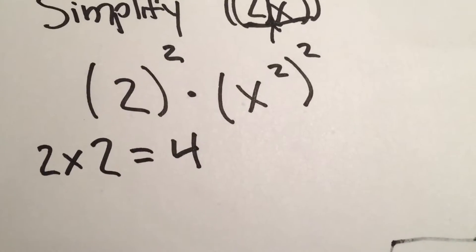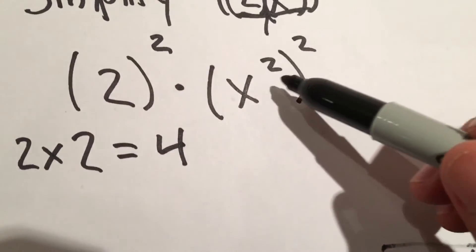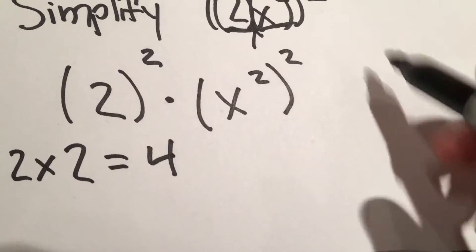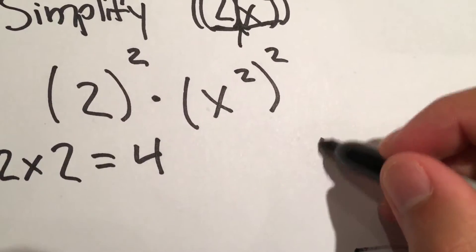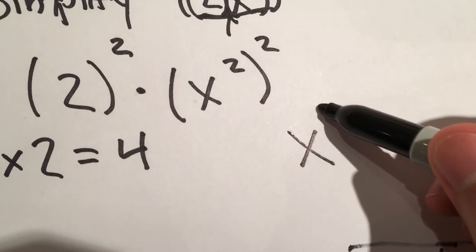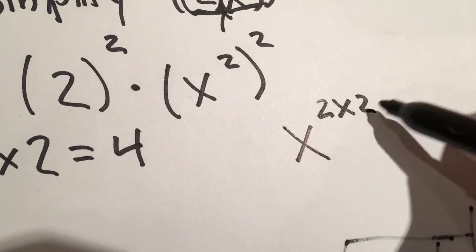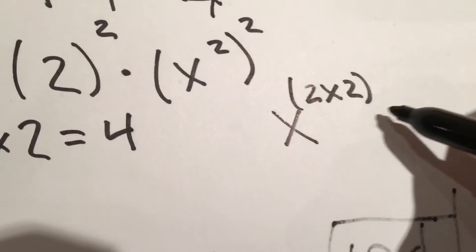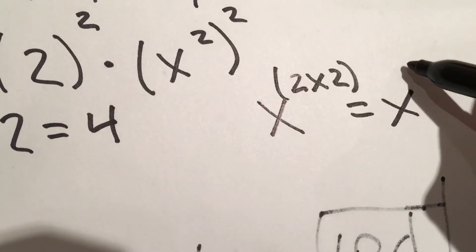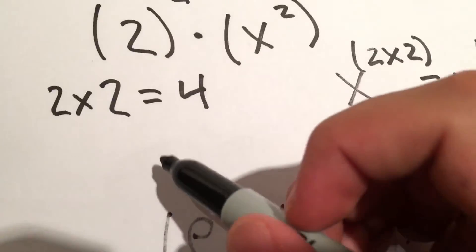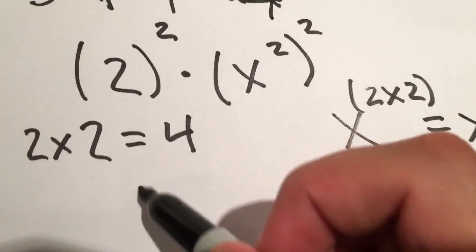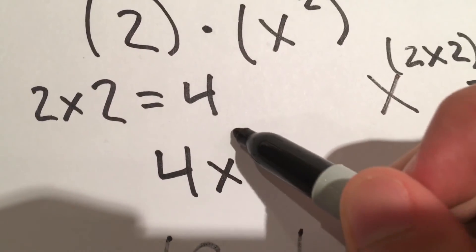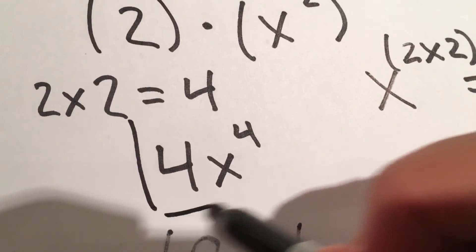And then for this one we can just use an exponent rule, which tells us that anything like this means we take the exponents and multiply them, so it's going to be 2 times 2, which equals x to the fourth. So our final answer is going to be 4x to the fourth.